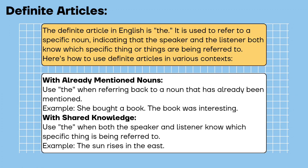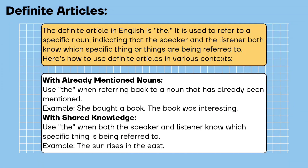Definite articles. The definite article in English is 'the.' It is used to refer to a specific noun, indicating that the speaker and the listener both know which specific thing or things are being referred to. With already mentioned nouns: use 'the' when referring back to a noun that has already been mentioned. Example: she bought a book; the book was interesting. With shared knowledge: use 'the' when both speaker and listener know which specific thing is being referred to. Example: the sun rises in the east.